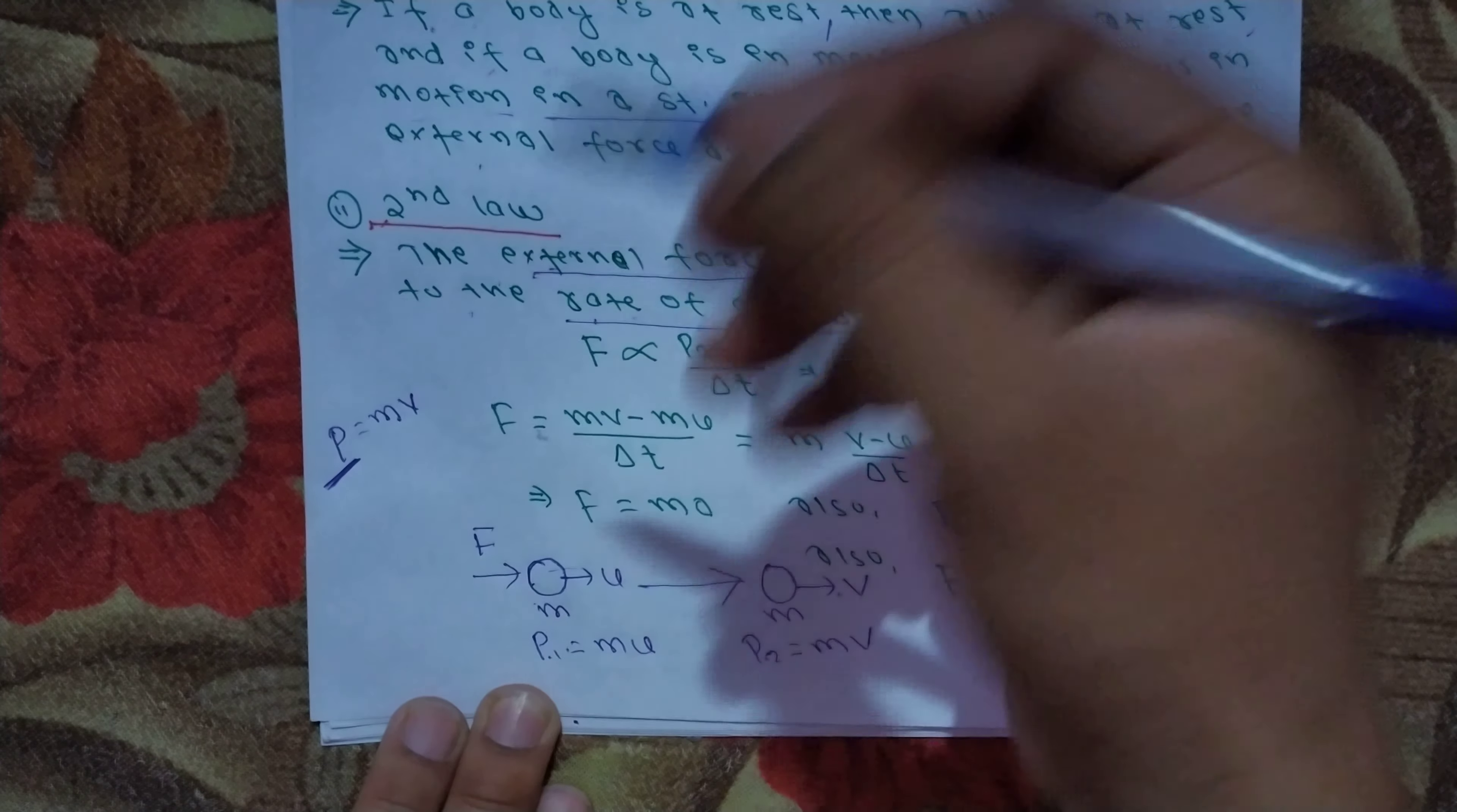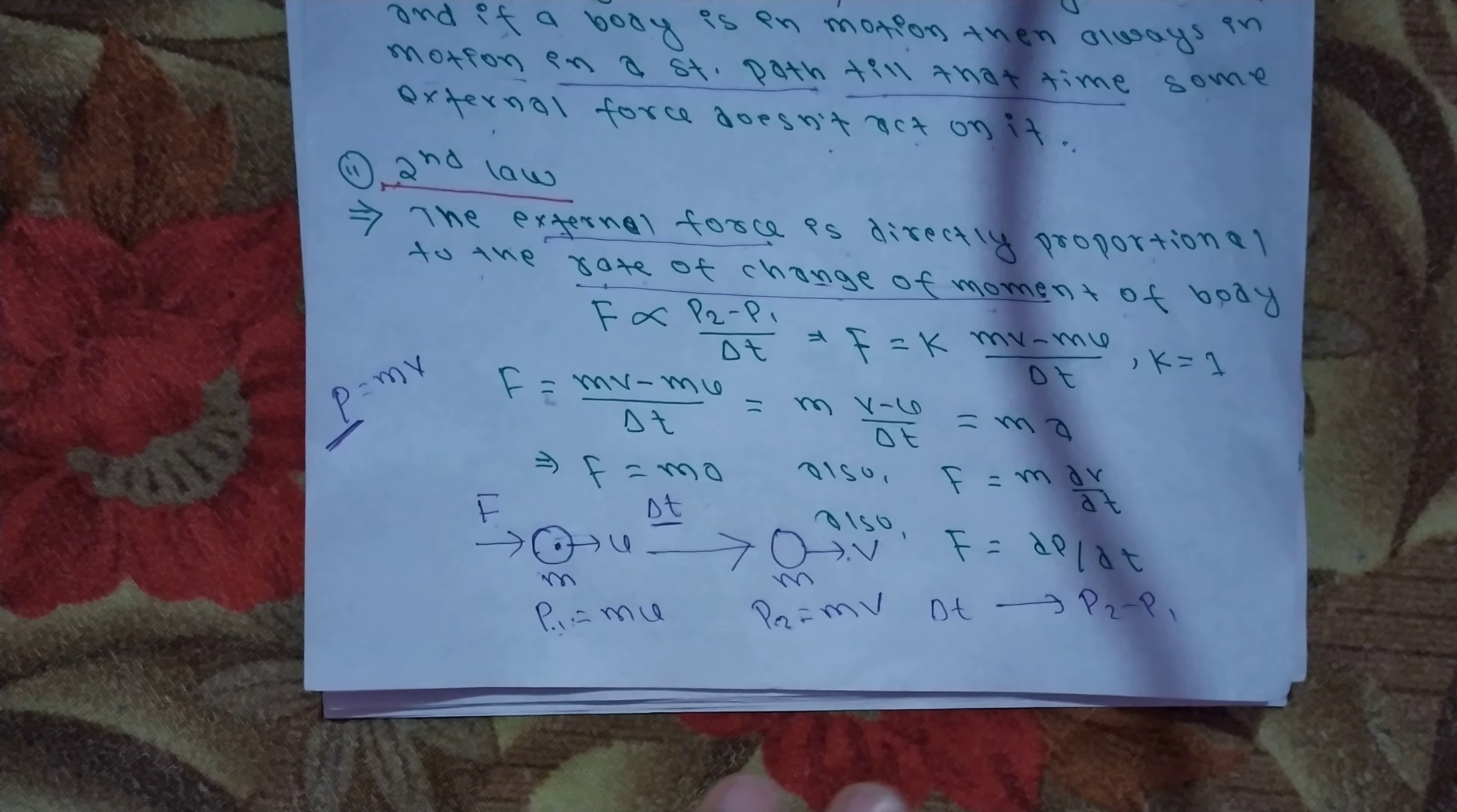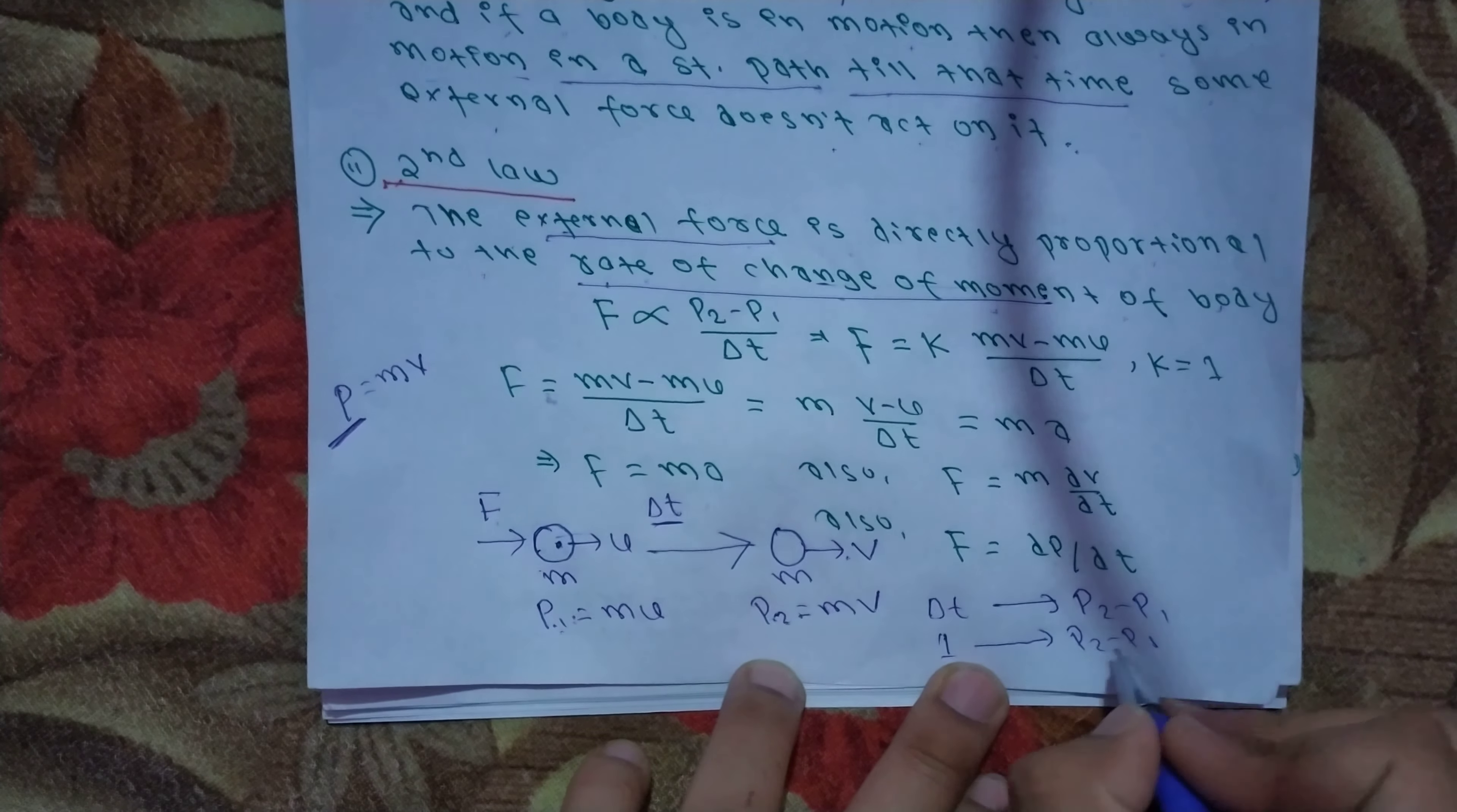The external force relates to the rate of change of momentum. Change of momentum is p2 minus p1. The rate is change over time. Force times delta t equals p2 minus p1. This is the rate of change of momentum per unit time.